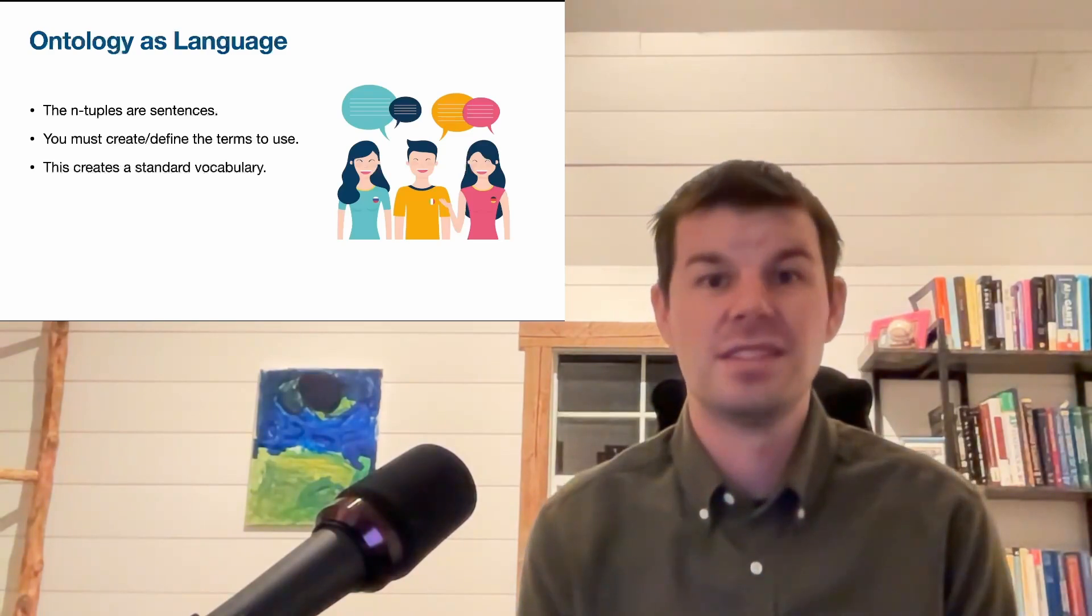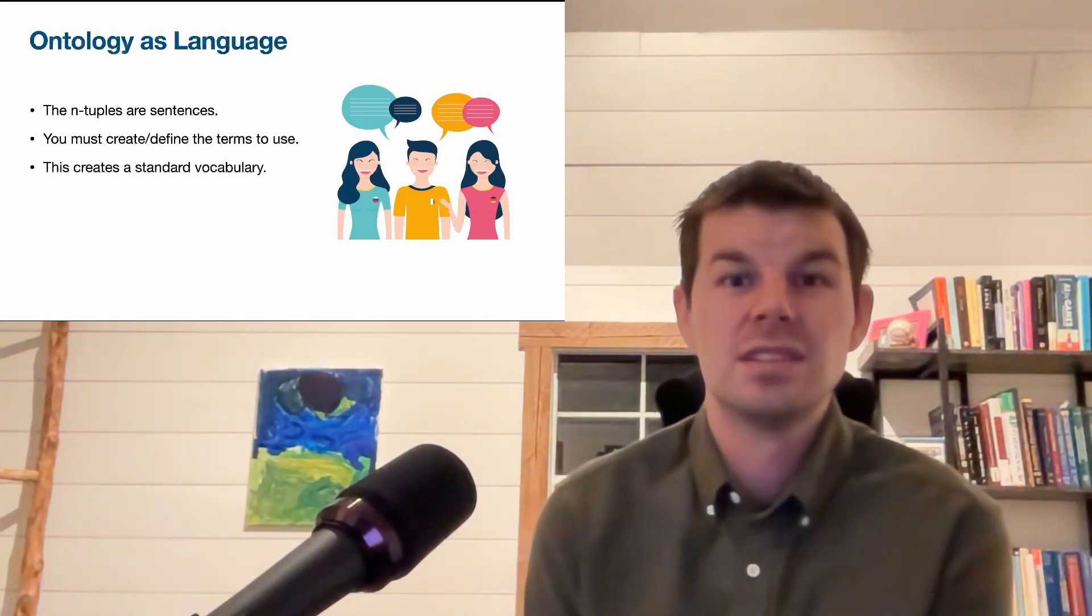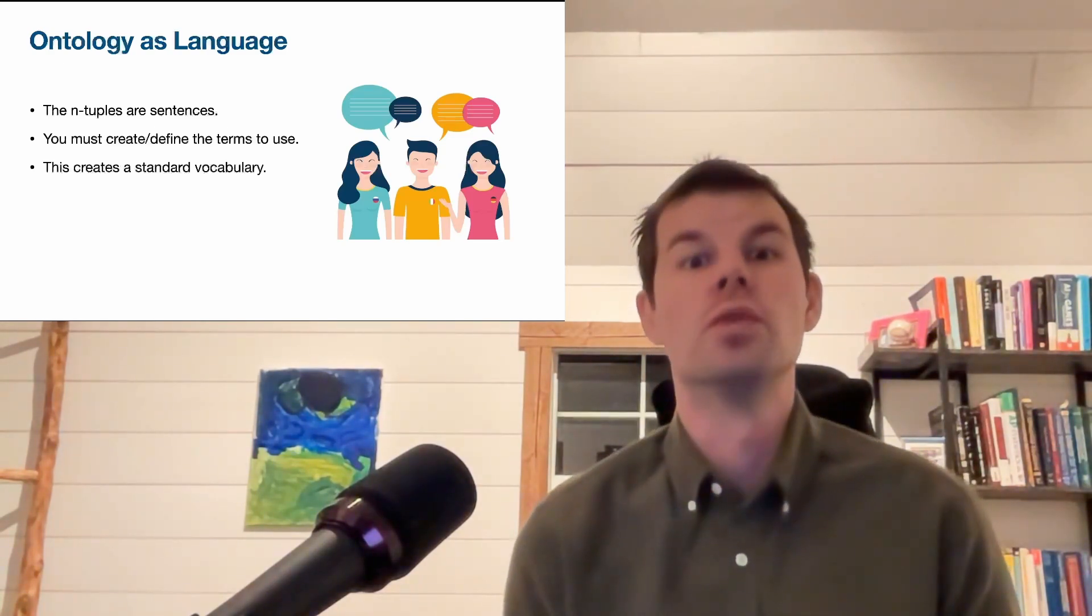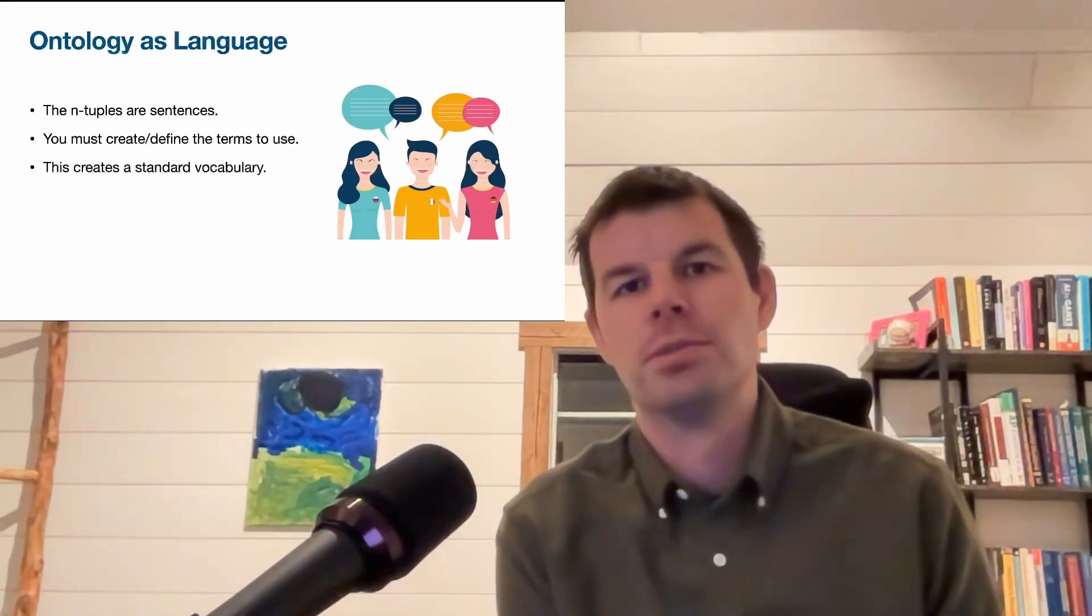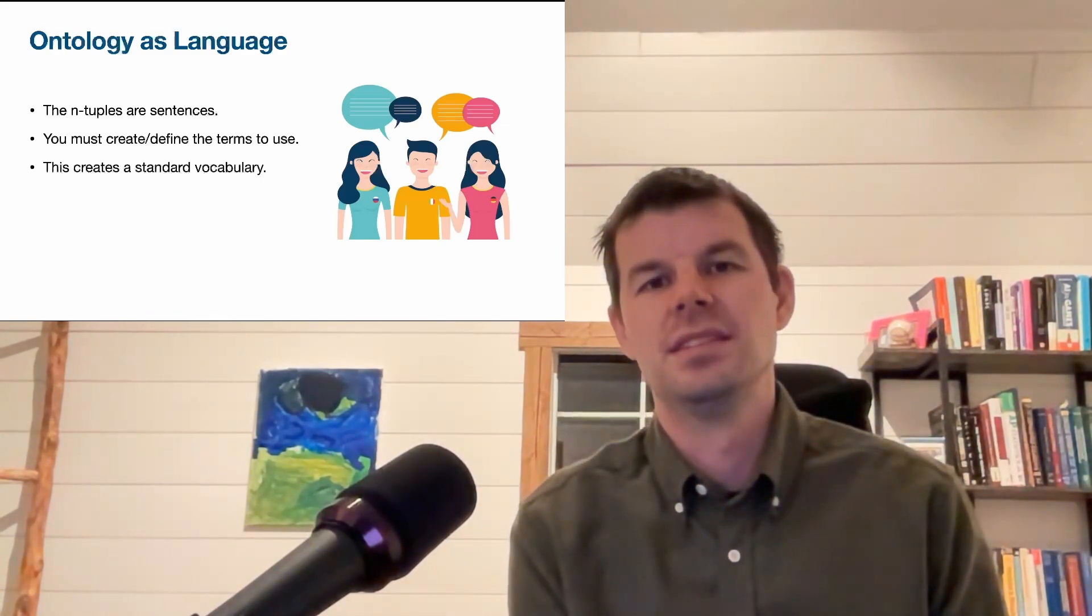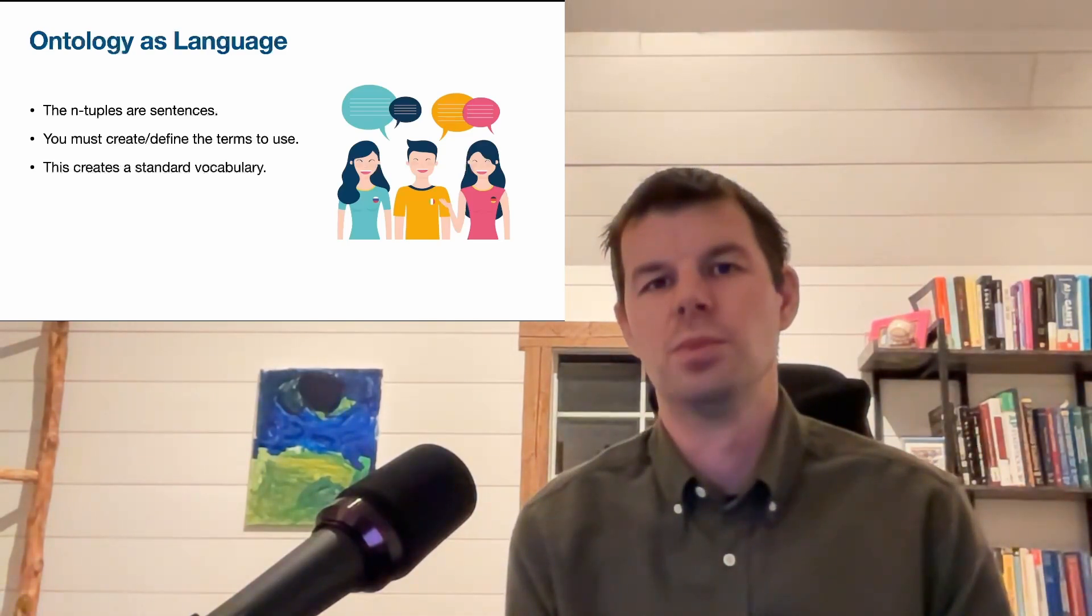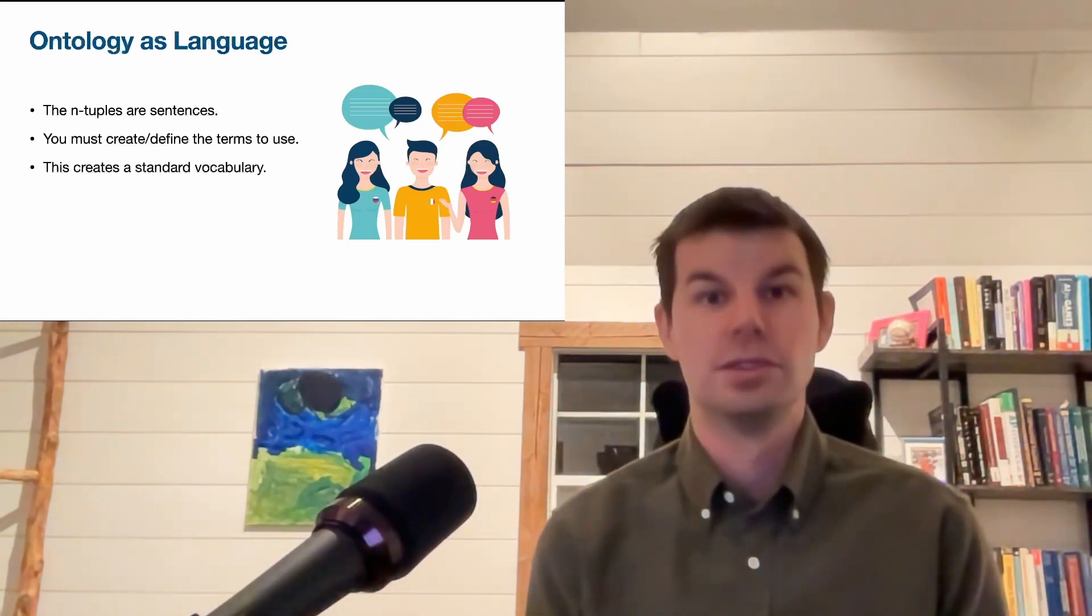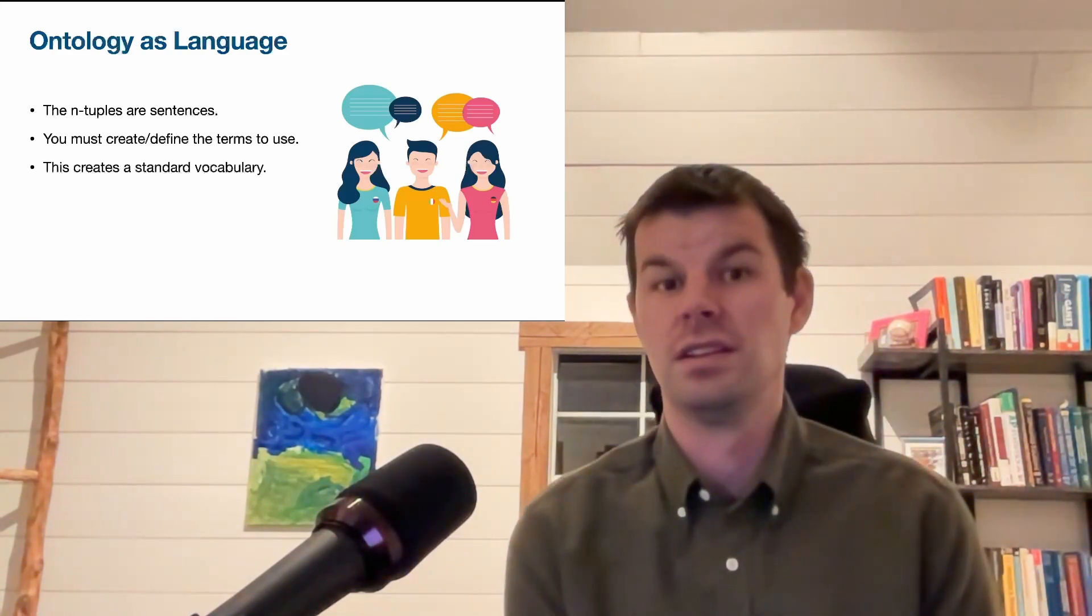This language then generates a standard vocabulary. This is one of the really useful aspects of building an ontology in a company organization - you force people to get clear: what do we care about? What do I mean when I say this is an operation? Or when I say that this is a health code violation? Let's get precise, let's write it down, let's know what we're talking about, and ontology is a language that forces you to get clear on that terminology.